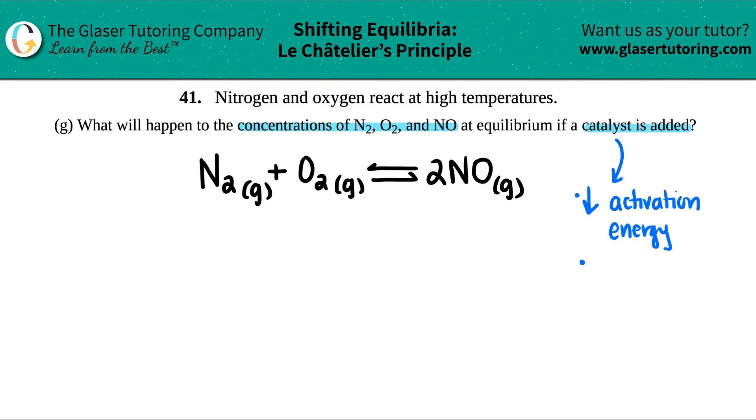And also a catalyst will just speed up the reaction. So I'll just say makes reaction faster. Once again, it's just helping the reactant turn into products very quickly, and then maybe vice versa as well. But it has nothing to do with changing the concentrations of reactants or changing the concentration of the product.